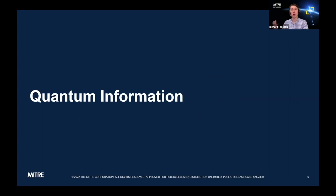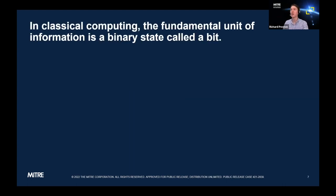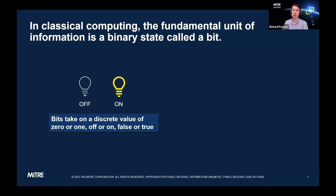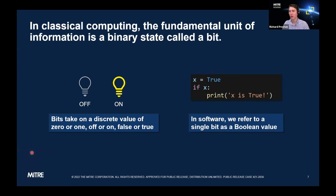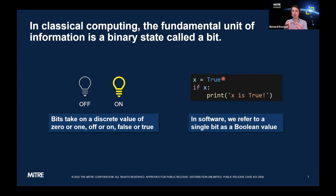The first thing to discuss is quantum information — what information means in a quantum context versus a digital one. The fundamental unit of information in a classical computer is the bit, which can take a discrete value of zero or one. On a chip, a bit is implemented with an electrical signal or voltage. In software — taking the software perspective — we refer to a single bit as a Boolean value, true or false. Here's some Python code: you have a variable storing a bit of information, and based on its value, you do something.